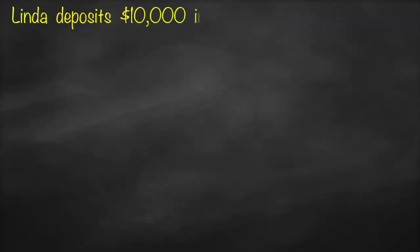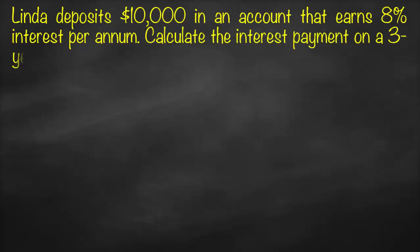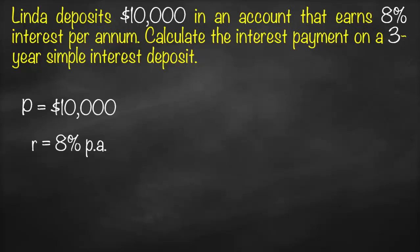Linda deposits $10,000 in an account that earns 8% interest per annum. Calculate the interest payment on a three-year simple interest deposit. The variables are: principal = $10,000, simple interest rate = 8% per annum, time = 3 years, and we need to calculate the simple interest amount, which is capital I.